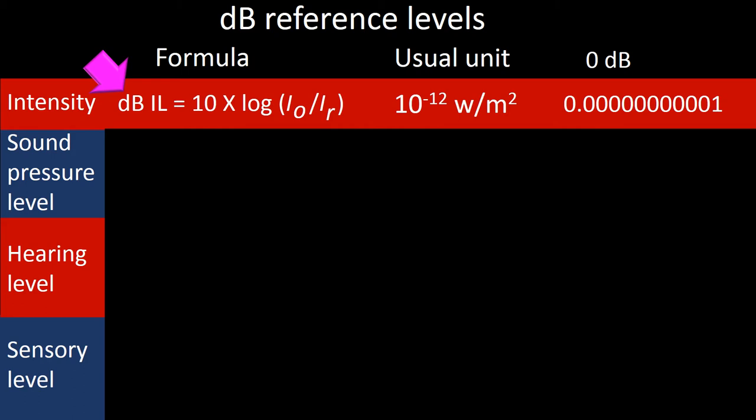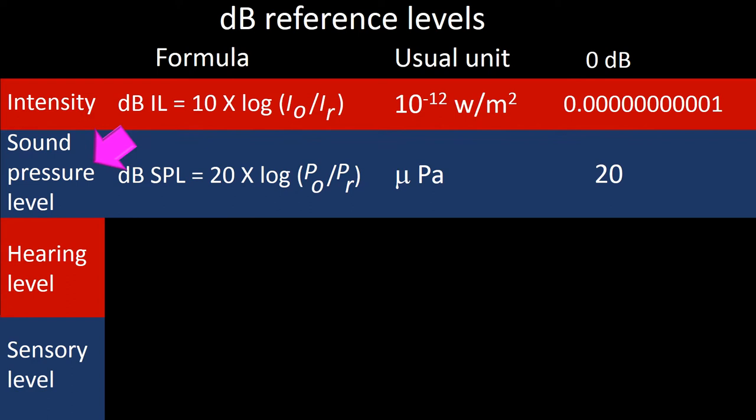The formula for intensity is expressed as dB intensity level or IL. IL equals 10 times the logarithm of the ratio of the intensity of the sound output to the intensity of the reference sound. The usual unit is 10 to the negative 12 power watts per square meter, or picowatts per square meter. 0 dB sound intensity level corresponds to 1 picowatt per square meter.